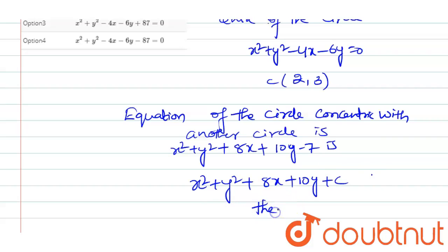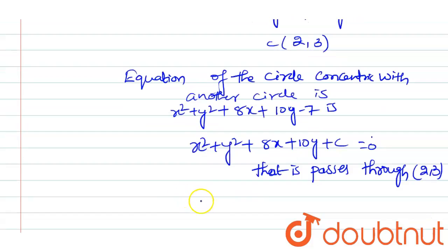The circle passes through the point (2, 3). We can substitute: 2 square equals 4 plus 9 plus 16 plus 30 plus c equals 0.